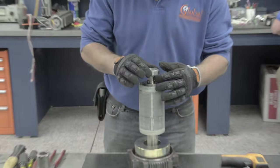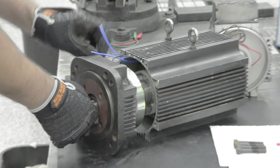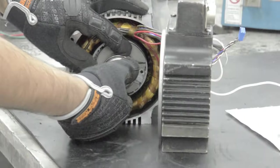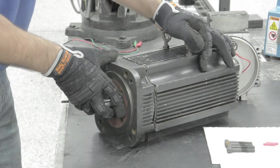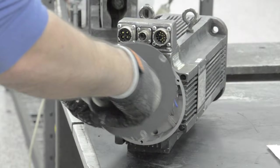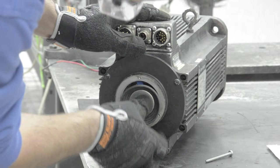Now we'll replace the back bearing. And now we're putting the rotor back in the stator and reconnecting the brake. Lastly, we'll put the end bell back on, reconnect the encoder wiring, and place the back plate back onto the motor.